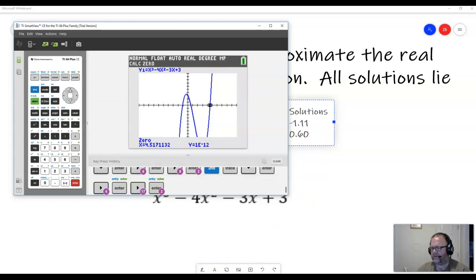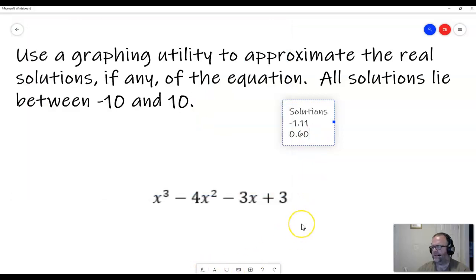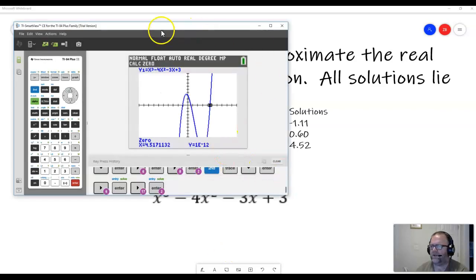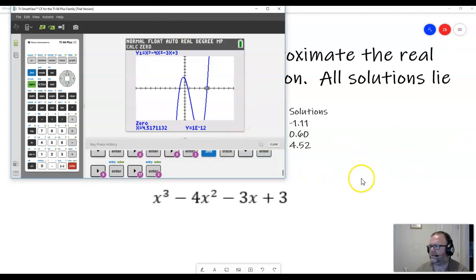So going back to here. And those are my three real solutions rounded to two decimal places. Which means that if I were to go back up to the function, and let's do that before we end. Just give you a little more calculator information.